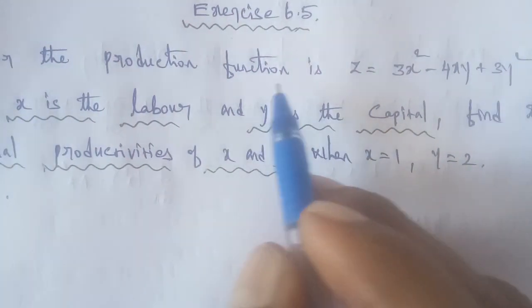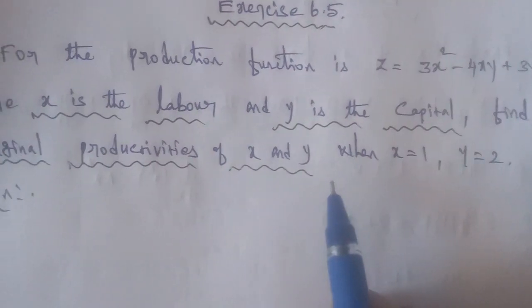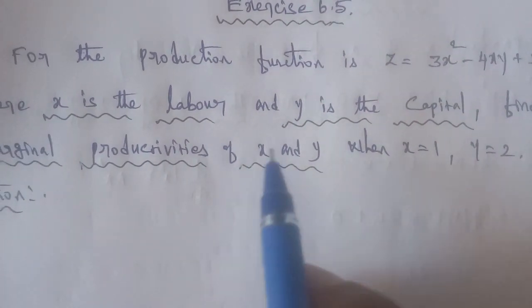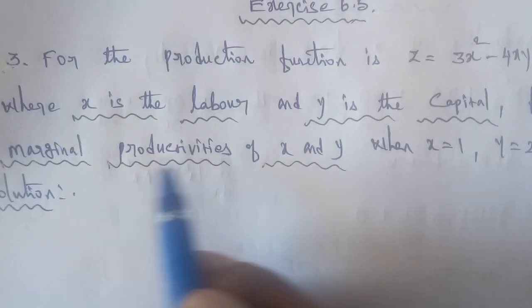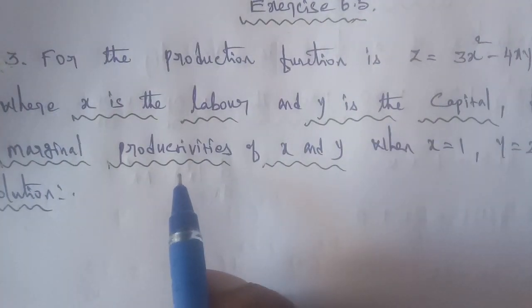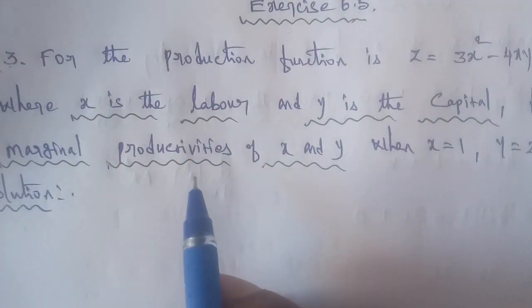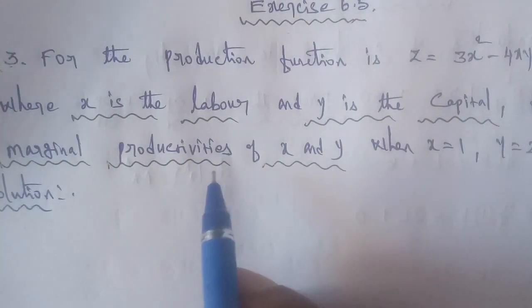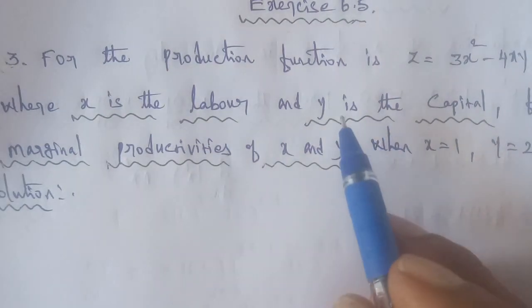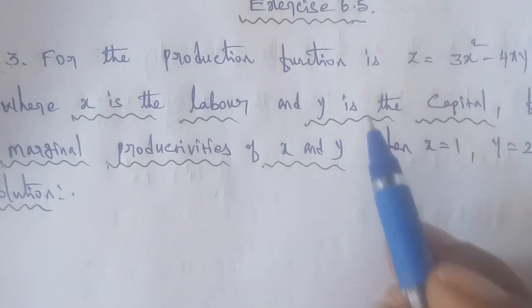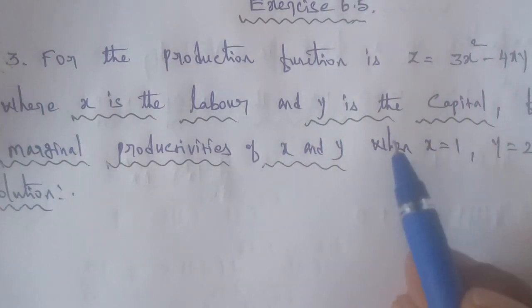Given: the production function. The marginal productivities are found using partial differentiation with respect to X and partial differentiation with respect to Y.